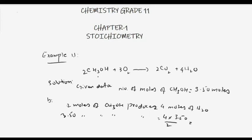That is equal to 14 divided by 2, which equals 7 moles of water. So if 2 moles of methanol produce 4 moles of water, then 3.50 moles of methanol will produce 7 moles of water. You can also convert these moles into grams and number of molecules. This is how you apply the concept of mole ratios in stoichiometric calculations. We'll discuss more examples in the next lecture — thank you!